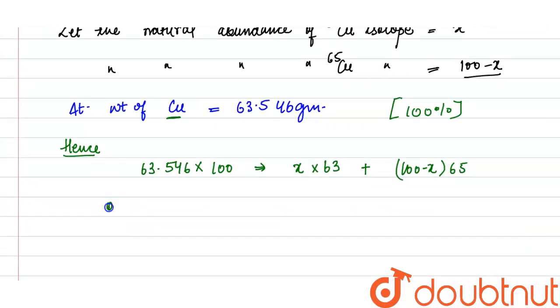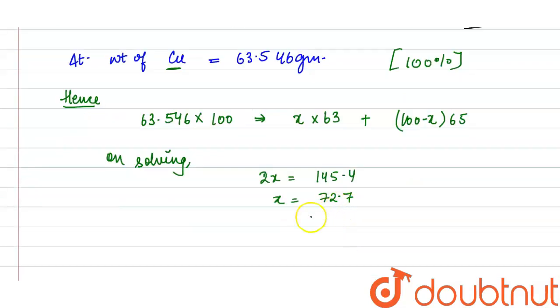So, on solving, 2X equals 145.4. So, X comes out to be 72.7 and more nearly it can be said that it equals 70%.